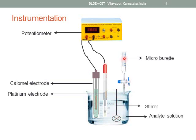In the burette, a standard titrant solution will be taken. The titrant solution will be added from the burette to the analyte solution. The concentration of the analyte solution changes, which will be detected by the platinum electrode whose potential changes with respect to the change in ion concentration of the analyte, and simultaneously the entire EMF value of the cell changes and is displayed on the potentiometer.